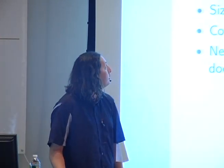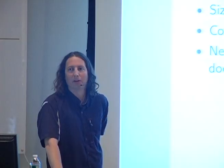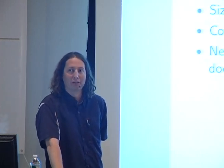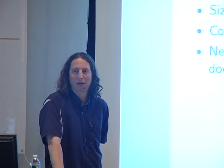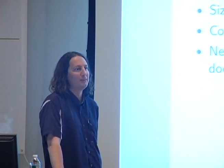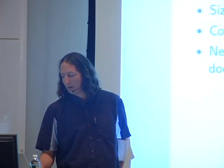There are some issues with local Debbugs. It doesn't handle missing bugs particularly well — if you try to get a bug you don't have mirrored, it just tells you it doesn't exist rather than why it doesn't exist or offering to update your configuration to get it next time. The mirror size is also extremely large, and it could be faster to sync. It needs someone to help write better documentation for it.